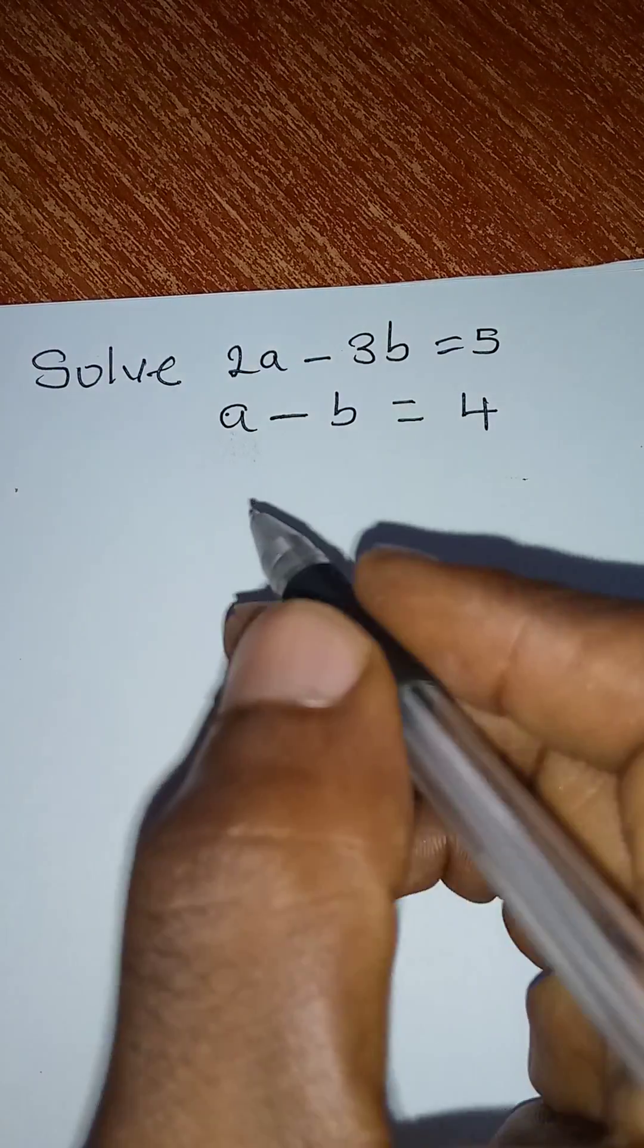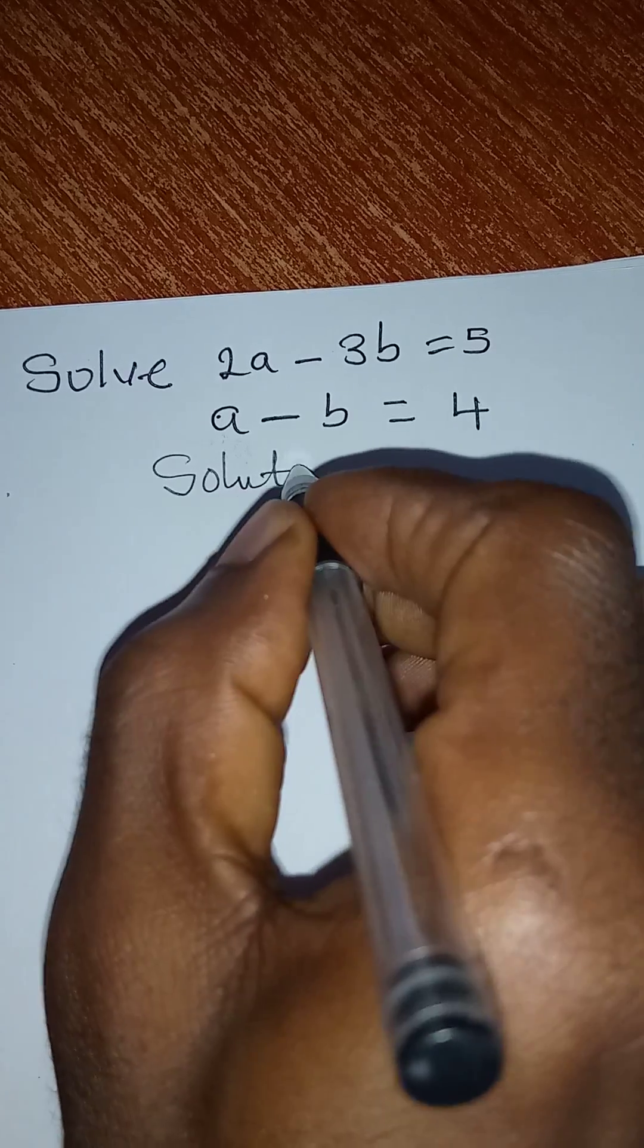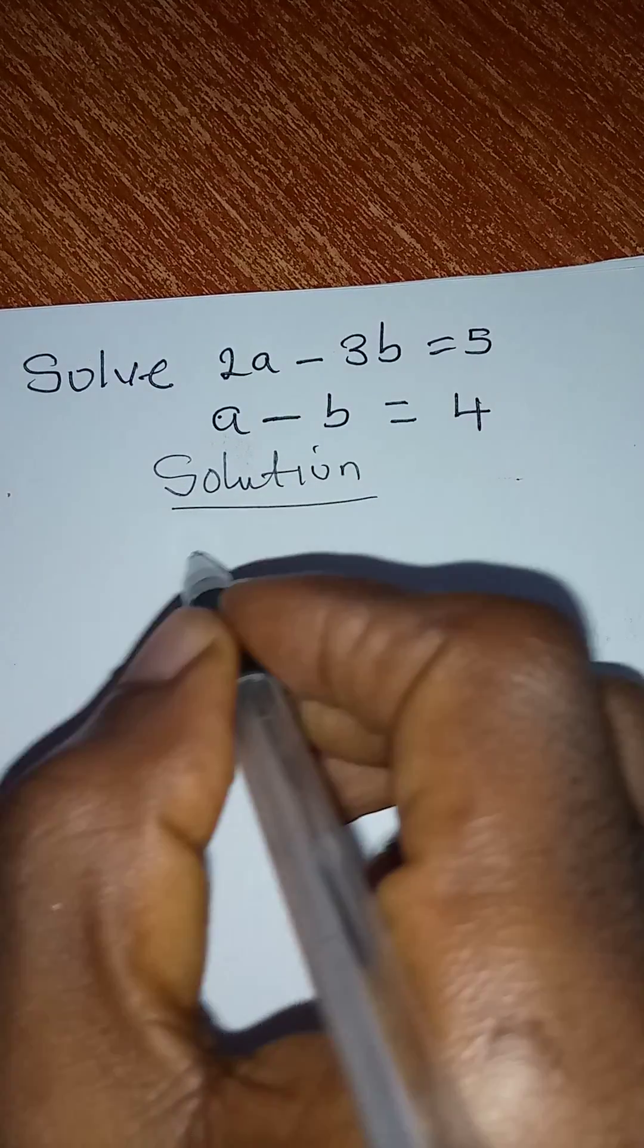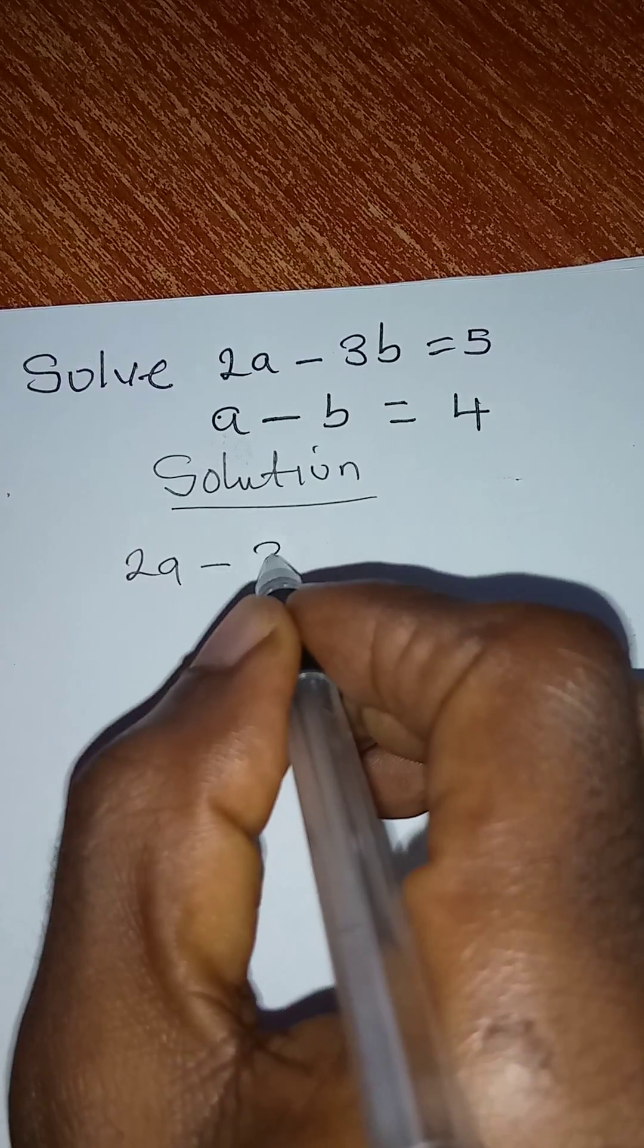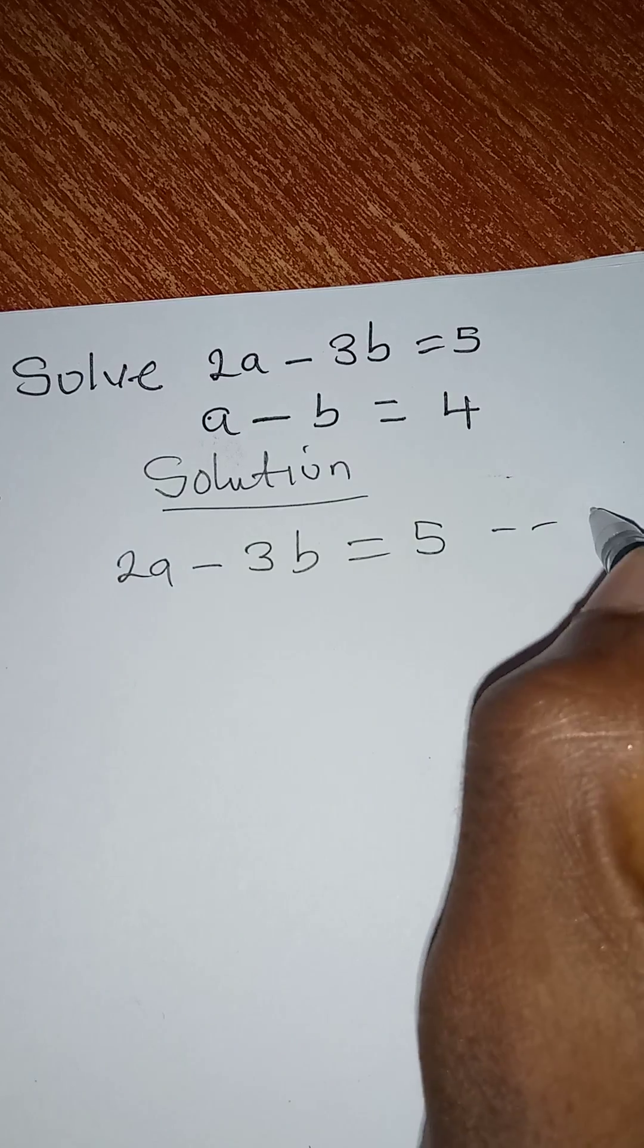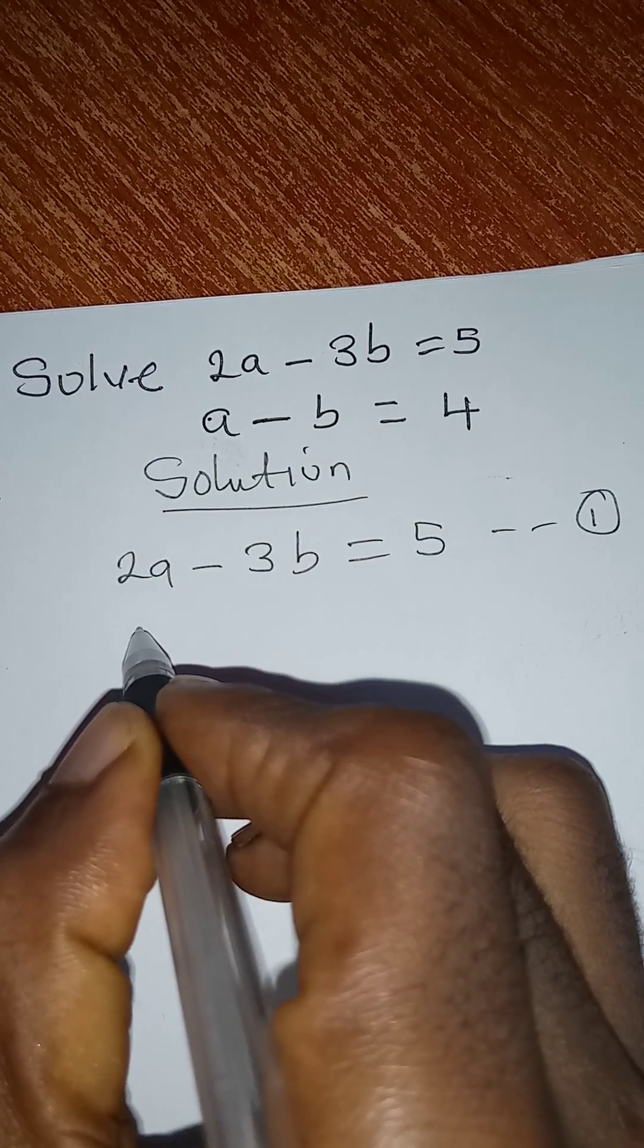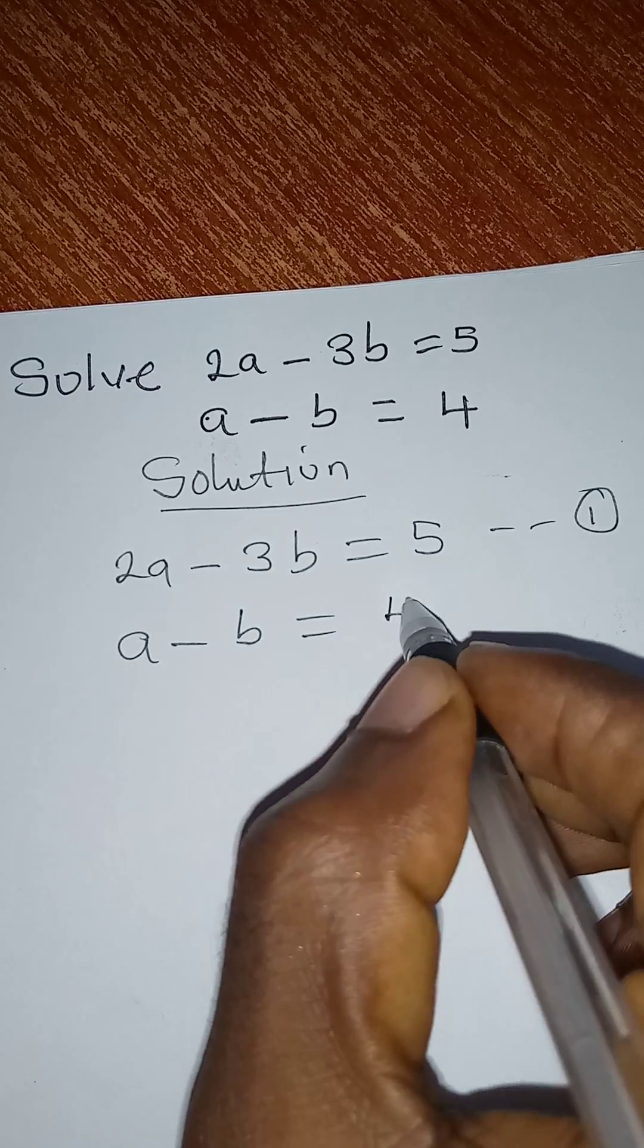Hello everyone. Let's solve this simultaneous equation very quickly. Our equation 1 is 2a minus 3b equals 5. So we'll call this equation 1 and equation 2 is a minus b equals 4.